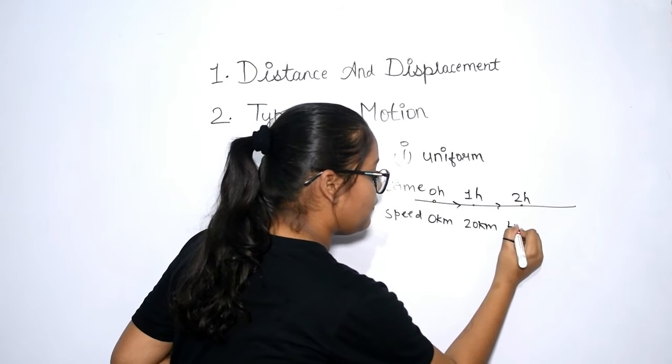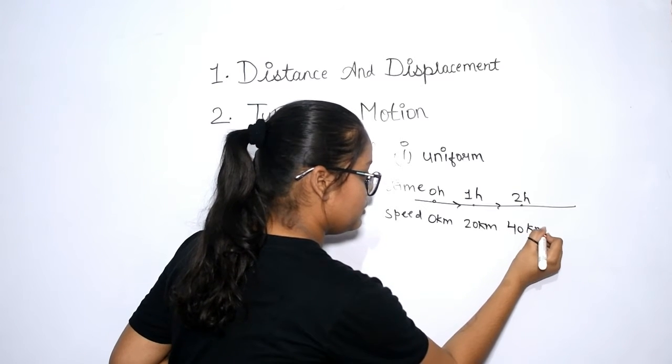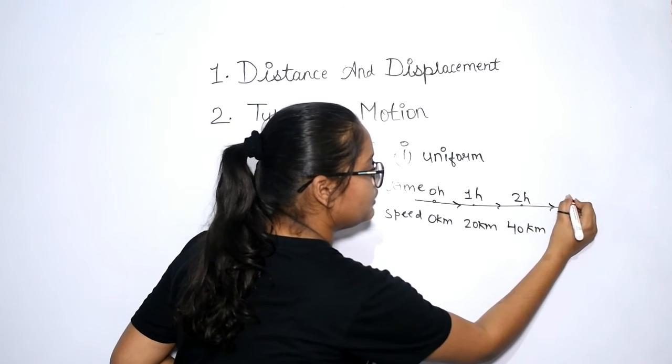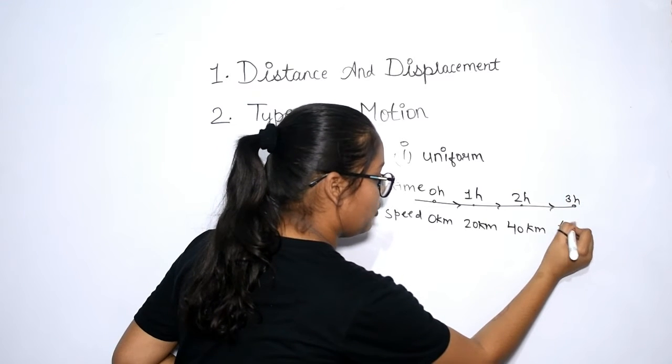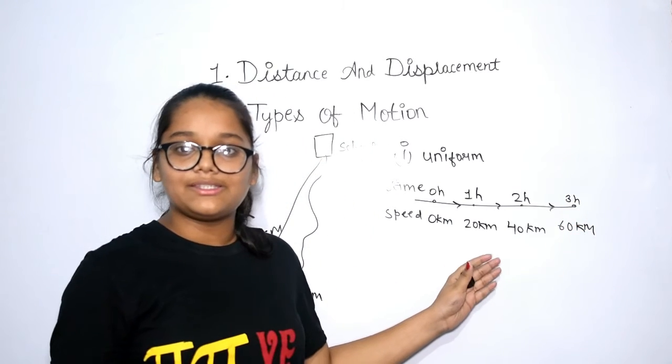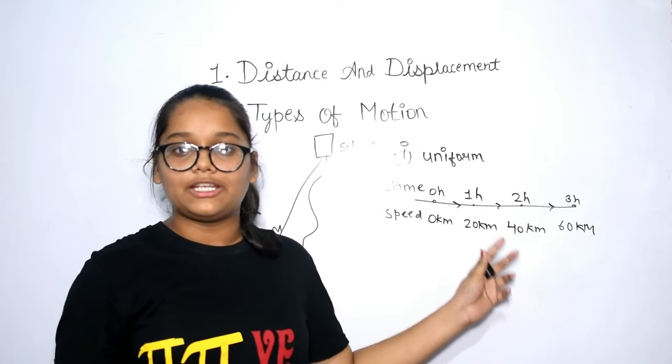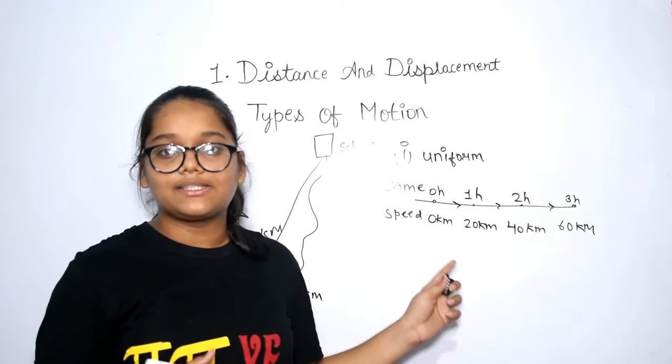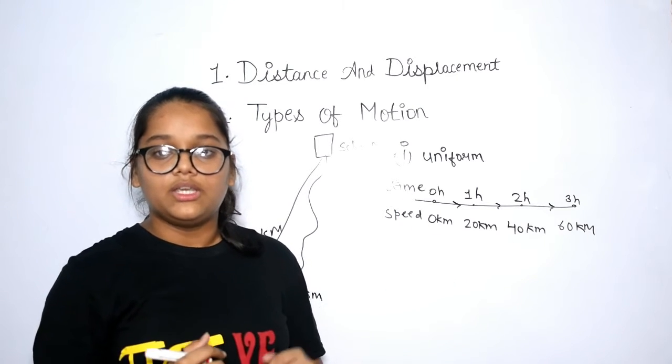One hour is equal to 20 km. 2 hour is equal to 40 km. And 3 hour is equal to 60 km. So, you are seeing that there is the difference of 20-20 km per hour. So, car is running at the constant speed. So, it is uniform motion.